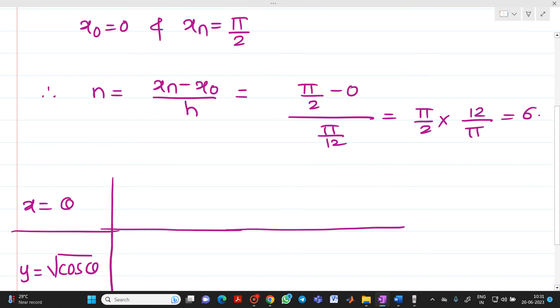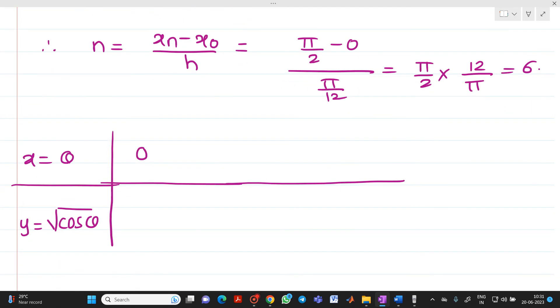Now, the first value will start from 0 because lower limit is 0. Then if you go for the next value, this is your x₀. x₁ will be equal to x₀ plus h, that is 0 plus π/12. So you will get that value as π/12.